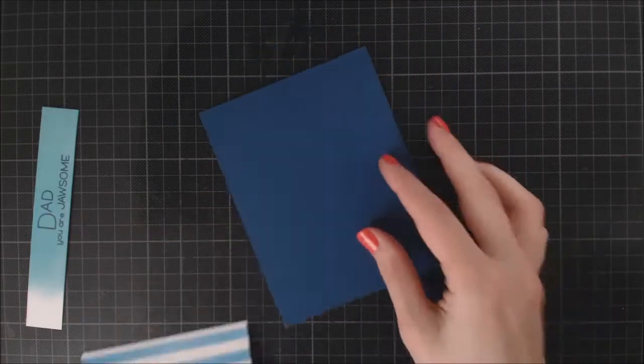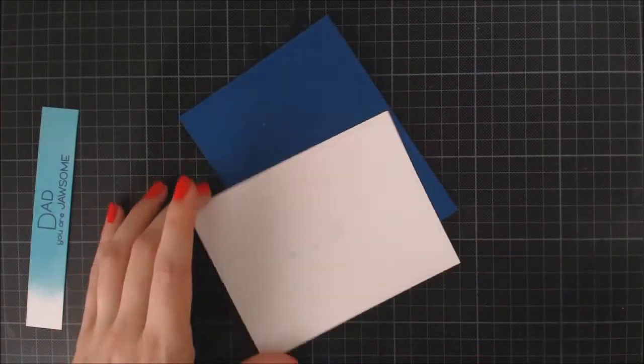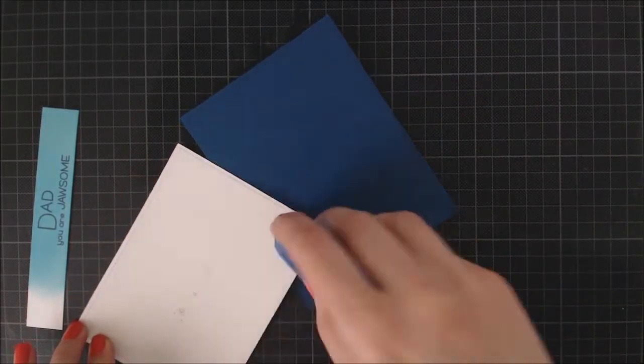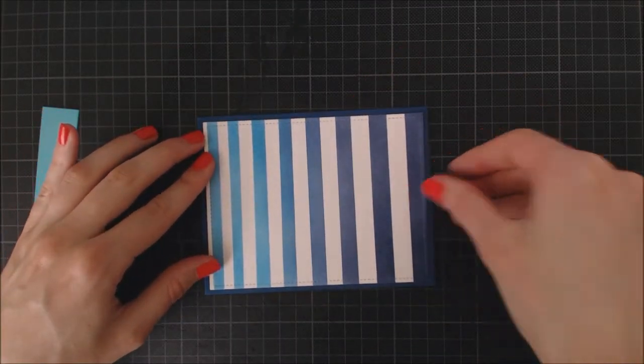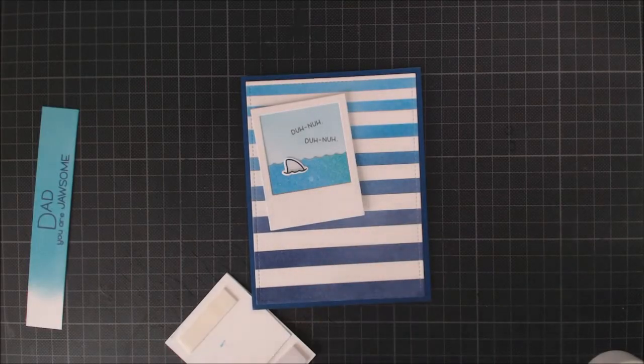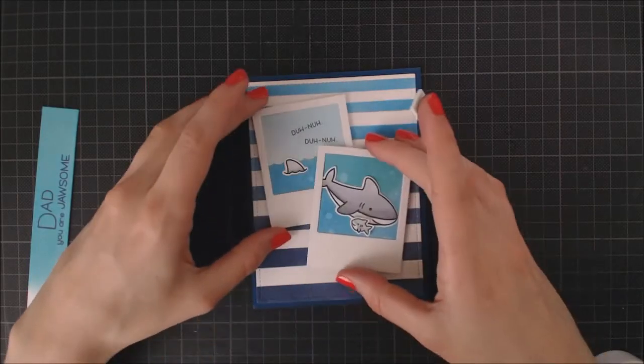So now it's time to put my card together and I'm going to start by gluing down my panel to a Blue Jay card base using my tape runner. And then I can go ahead and add my Polaroids and sentiment as well using foam adhesive.